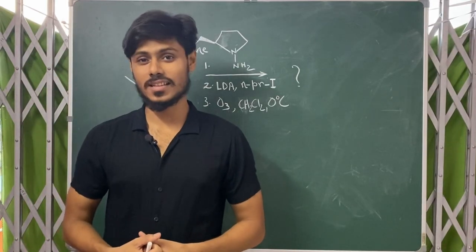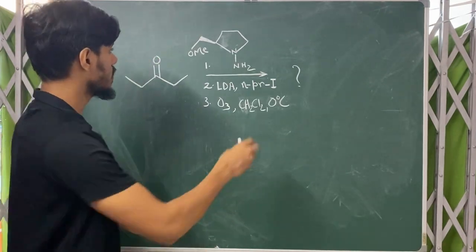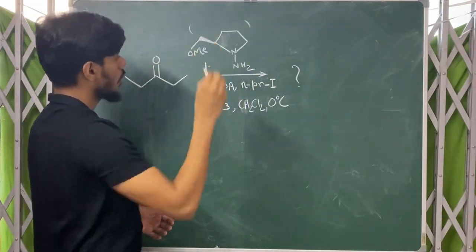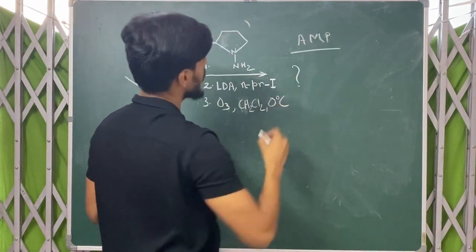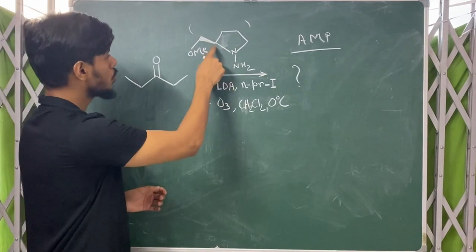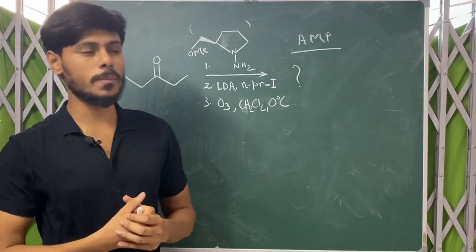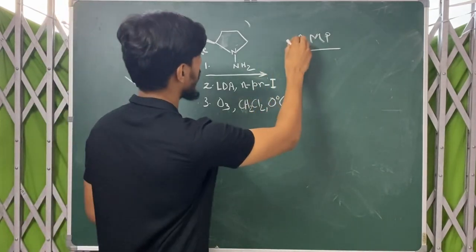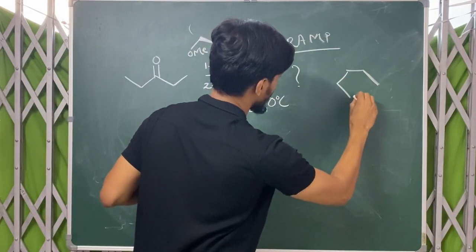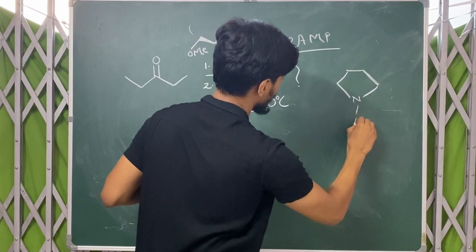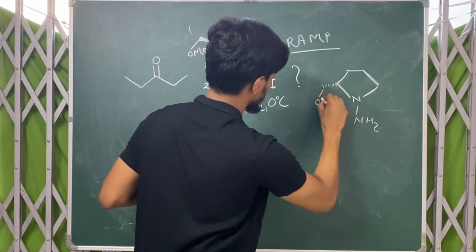Today's topic of discussion is Ender's stereoselective alkylation, where we use a special reagent called RAMP. The full form is 1-amino-2-methoxymethylpyrrolidine. Two variants of this reagent are used: one is R-AMP and another one is S-AMP.